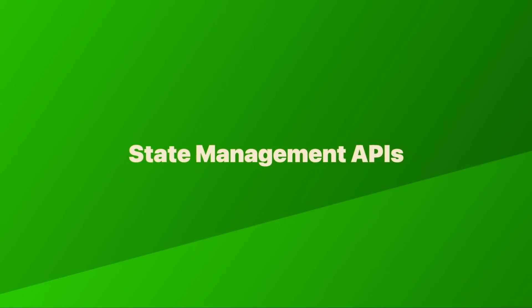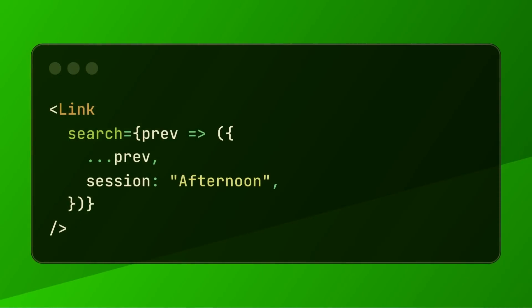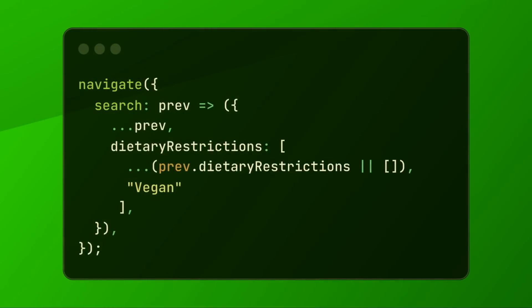We're going to need next-level state management APIs that are going to be able to handle that JSON. We packed first-class state management APIs right into the router — here's the type-safe link component updating some search parameters, and here's an example using a reducer function to keep existing search parameters around while updating others. There are also imperative versions via useNavigate.